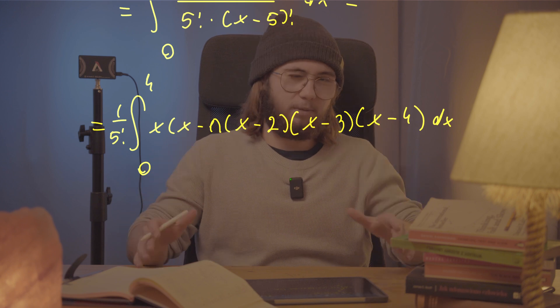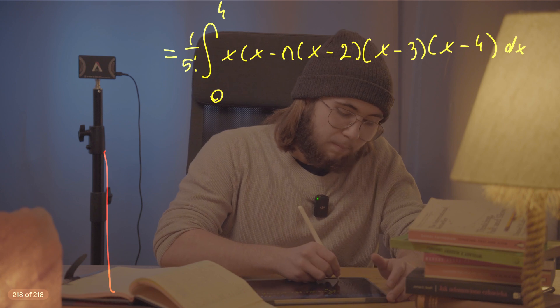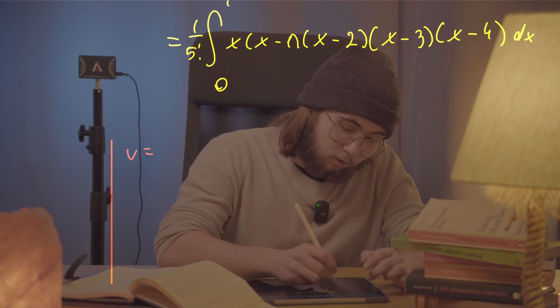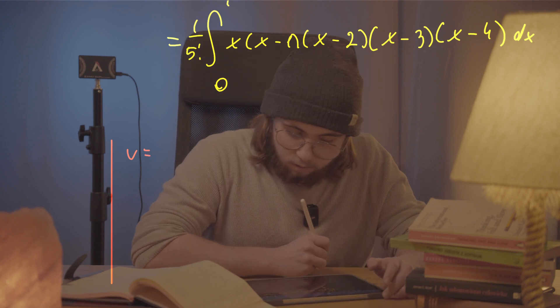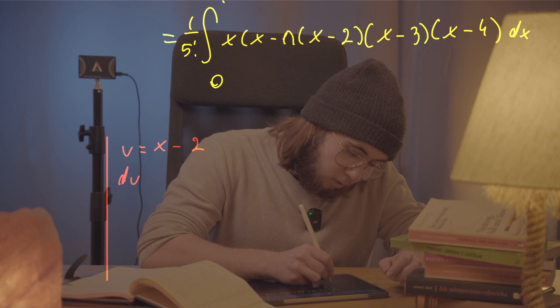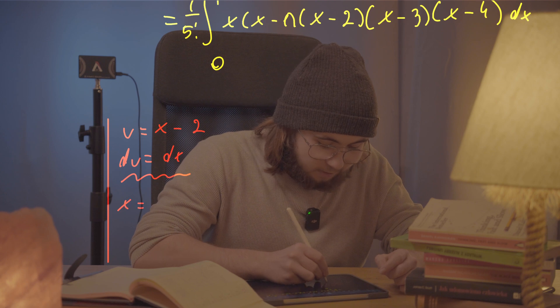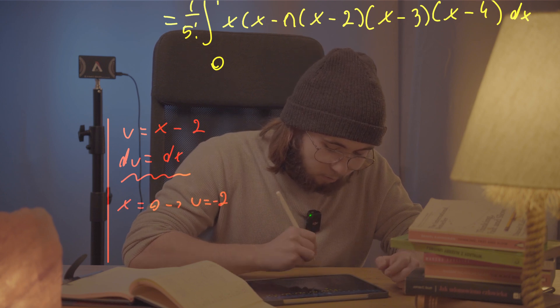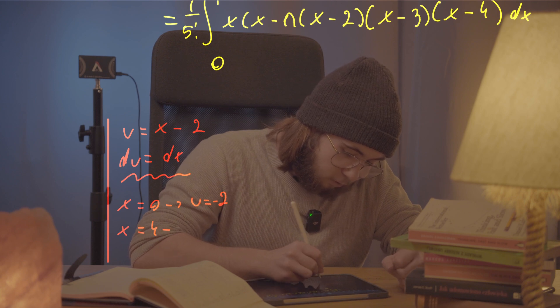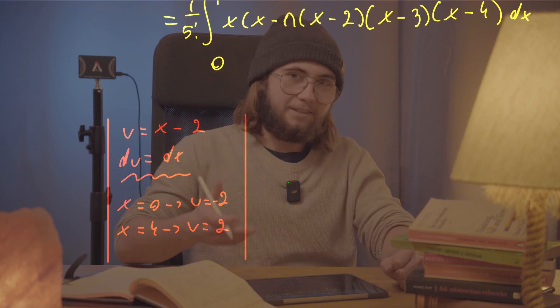And I would like to show you guys a better way to solve this integral that does not require you to multiply out the quintic polynomial. That is with a u sub, a pretty interesting u-substitution that will actually make this far, far simpler. So I would like to, kind of out of the blue, but let me just do it. Make a u sub such that u will be equal to x minus two. And so du will be just dx. Bear with me for now. And so whenever x is equal to zero, u will be equal to negative two. And when x is equal to four, u will be equal to positive two, like this.